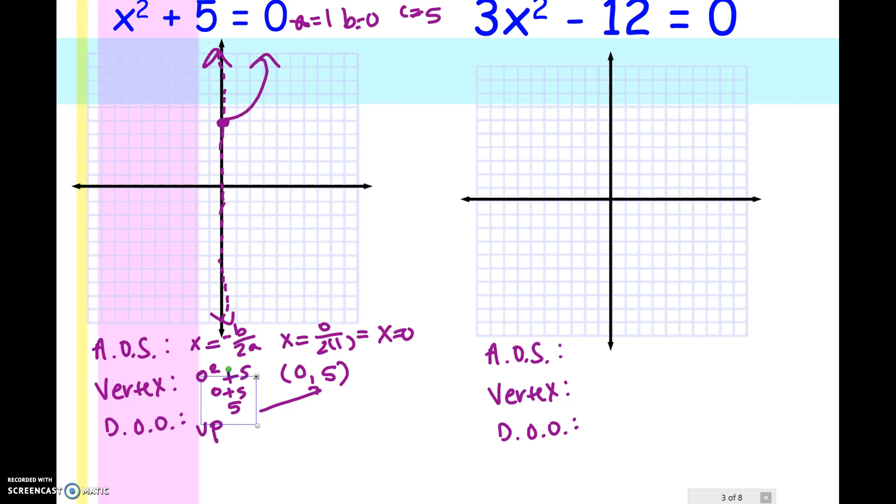And the direction of opening, since A is positive, I know it's going to be up. So since this opens up, and I'm not going to get exact points right now because I just want to find out how many solutions there are, this never crosses the x-axis. And since my solutions are my intercepts and this will not have intercepts, then I know that this is a no-real-roots solution.